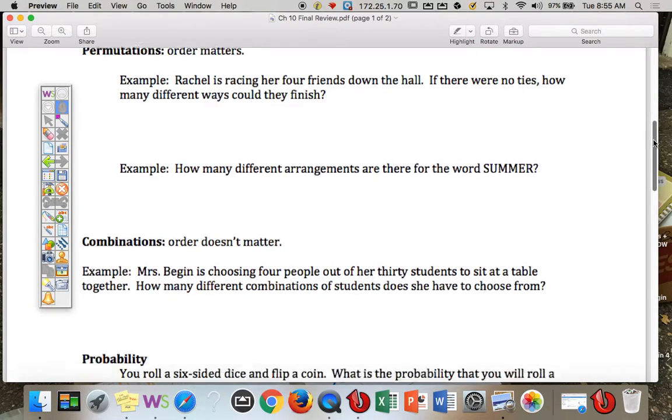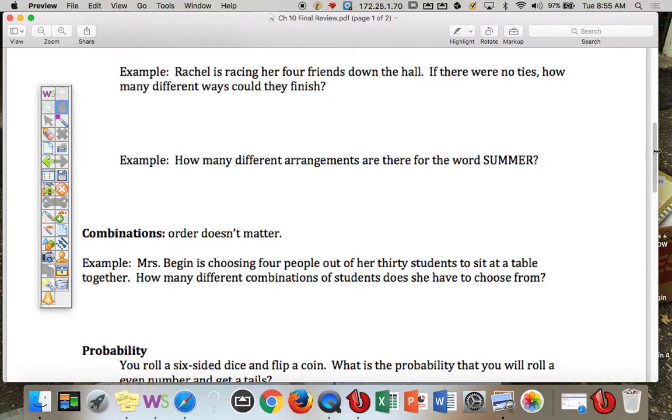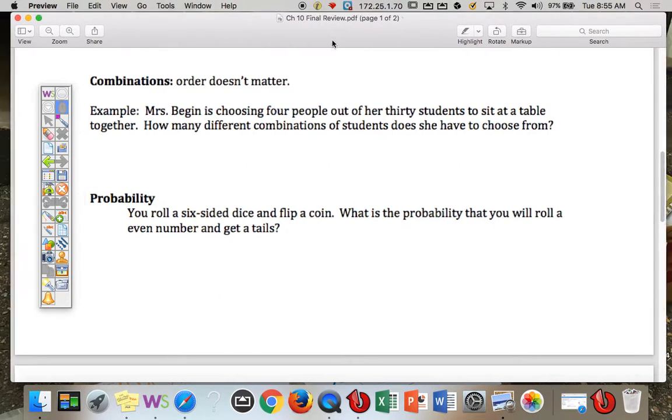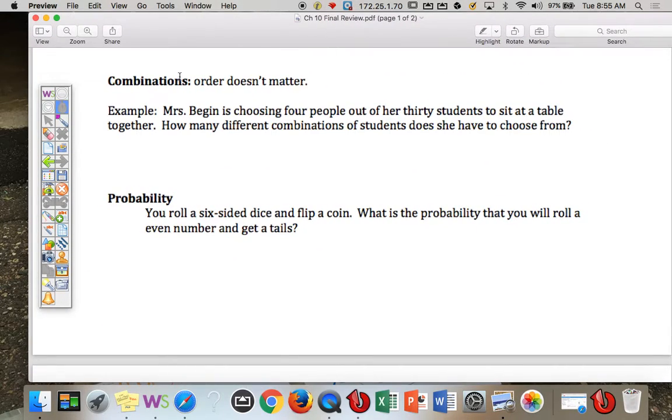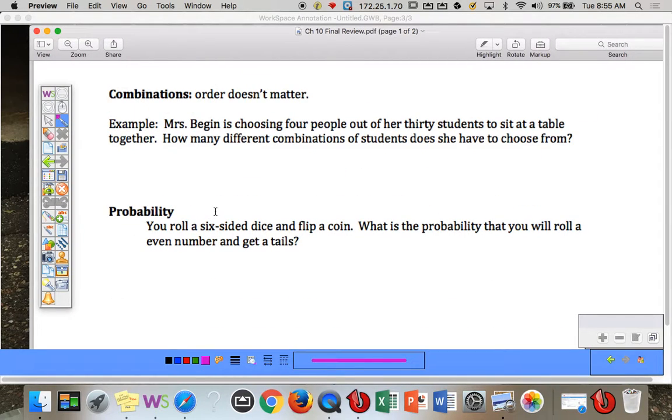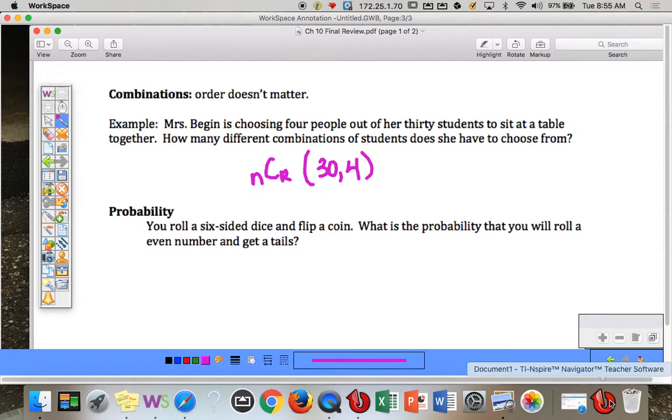And combination is when order doesn't matter. So here's an example. Mrs. Bajan is choosing four people out of our 30 students to sit at a table together. How many different combinations does she have to choose from? So for this one right here, you can use your combination button. Out of 30 students, you want tables of four.